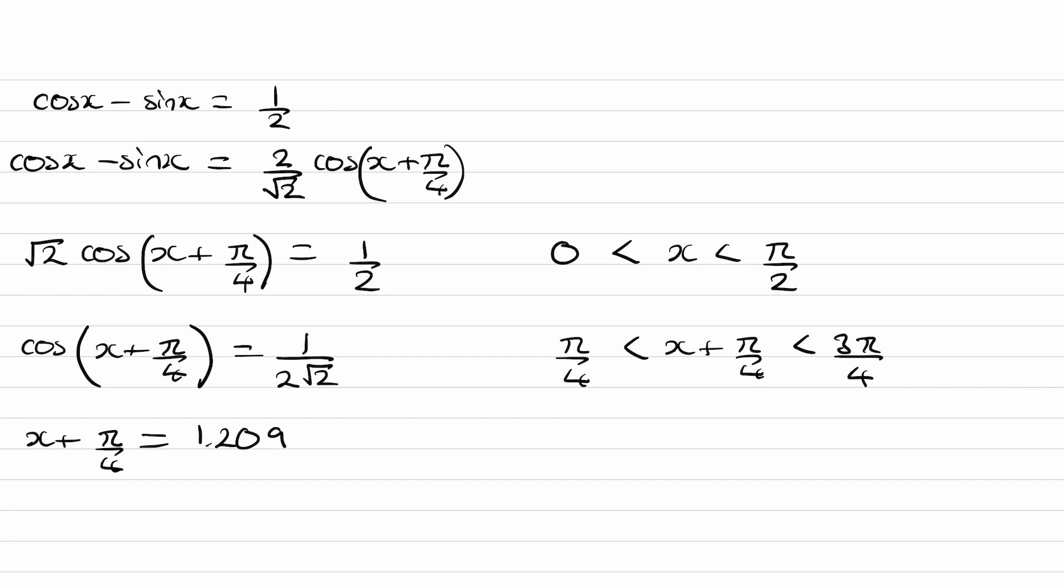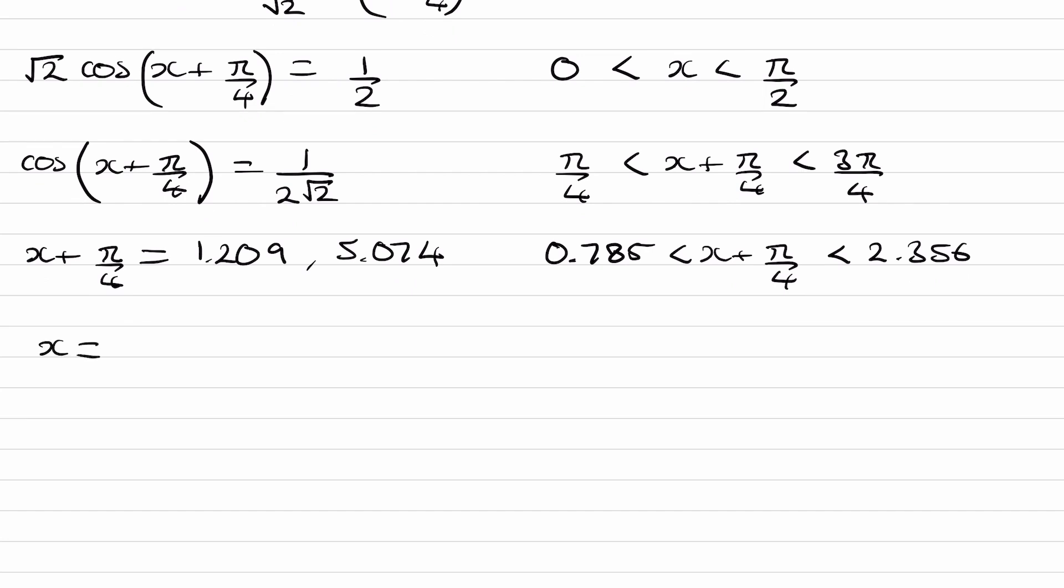So these numbers, the π/4 and the 3π/4, I'll just write down what they are as decimals just so it's easy for you to see how the numbers that we have compare to the domain. So this is 0.785 and the 3π/4 is 2.356. Using cast diagrams, using graphs, using whatever method, we can find the alternative angles for cos(x + π/4) equals this. This is the first angle. The quickest way for a cos function is to just do 2π minus this. So 2π minus that answer and we end up with 5.074. Now that's not in our domain so we can ignore that one. We can then just take away π/4 from the 1.209 and we end up with 0.424 which will be our final answer.